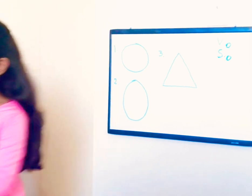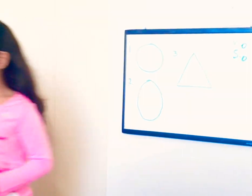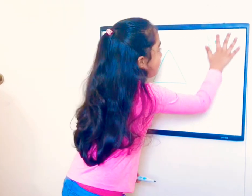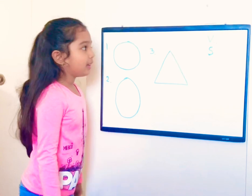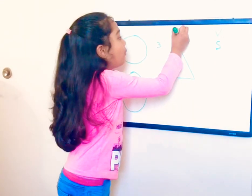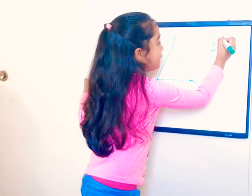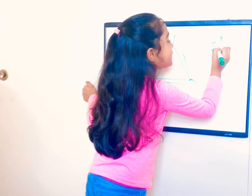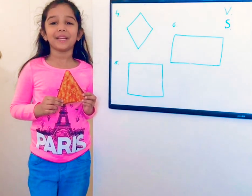Next is triangle. Let's count the triangle's vertices and sides. One, two, three — there are three vertices. And one, two, three — there are three sides too. This Dorito is the same shape as a triangle.